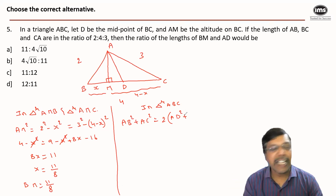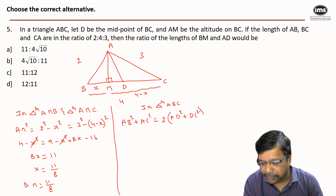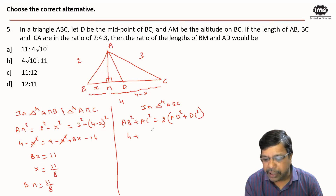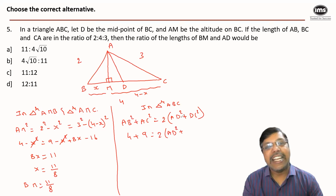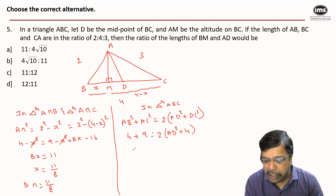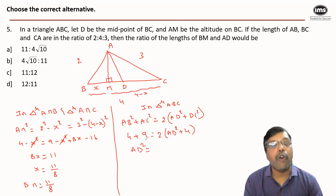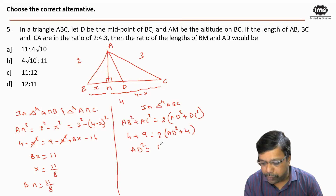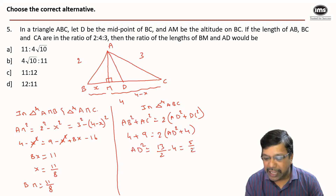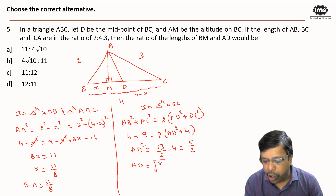Since D is the midpoint, DC = 2. We know AB = 2 and AC = 3, so: 2² + 3² = 2·AD² + 2·2². That gives 4 + 9 = 2·AD² + 8, so 13 = 2·AD² + 8, meaning AD² = 5/2. Hence AD = √(5/2).